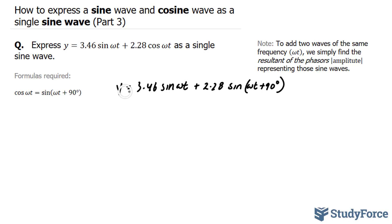So what I'll do next is rewrite these in terms of their amplitude and angle. The amplitude of this term is 3.46 and the angle, well, there's no phase angle so we'll say add an angle of zero. And for this one, we have an amplitude of 2.28 at an angle of 90 degrees.